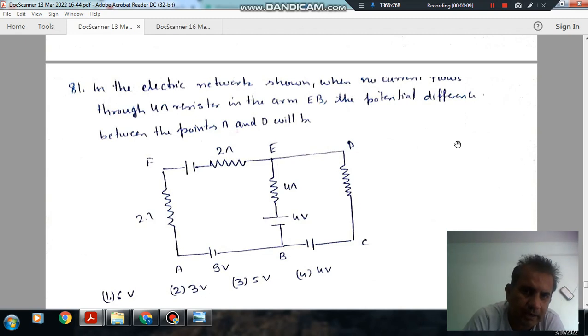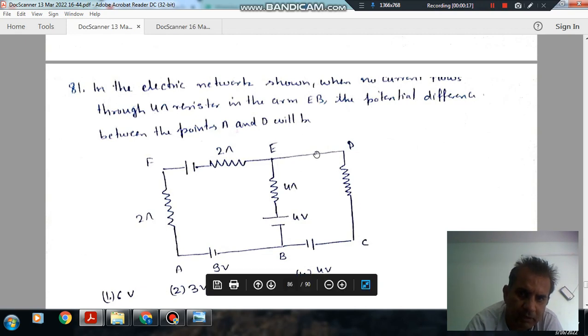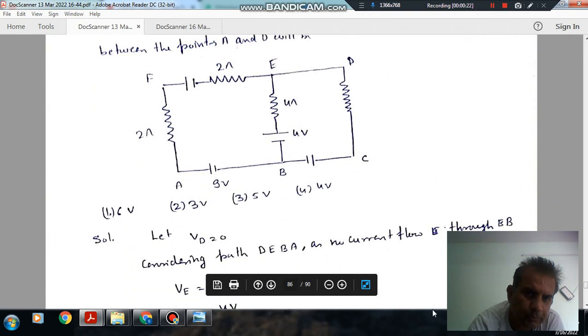Question number 81: In the electric network shown, no current flows through 4 ohm resistance in the arm EV. The potential difference between A and D will be: option 1, 6 volt; option 2, 3 volt; option 3, 5 volt; and option 4, 4 volt.